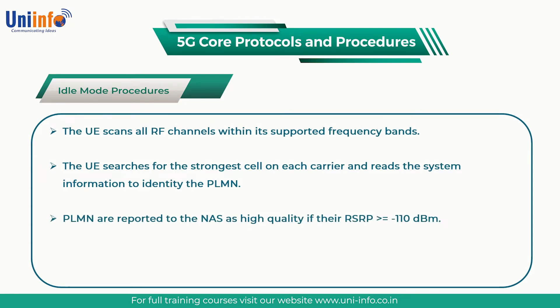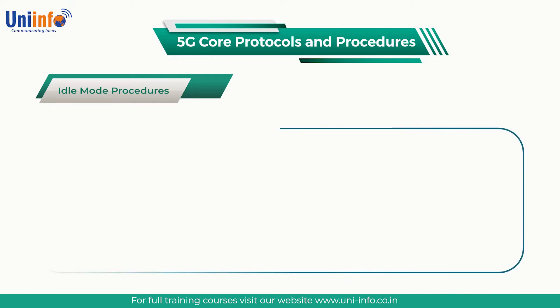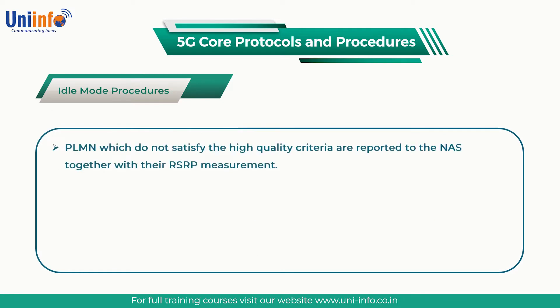PLMNs are reported to the NAS as high quality if their RSRP is greater than or equal to minus 110 dBm. In this case, the measured RSRP value is not reported to the NAS layer, so high quality PLMNs are not differentiated by their signal strengths. PLMNs which do not satisfy the high quality criteria are reported to the NAS together with their RSRP measurement.